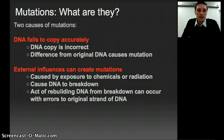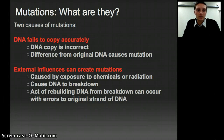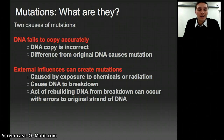The other way mutations can occur is if there's some sort of external influence, such as chemicals or radiation. After the American military dropped the atomic bombs in Japan, the radiation caused numerous mutations, and cancer was probably one of the larger causes of death after the dropping of the bomb. Radiation causes the DNA to break down, and the act of rebuilding the DNA can occur with errors to the original strand — and that is also a mutation.